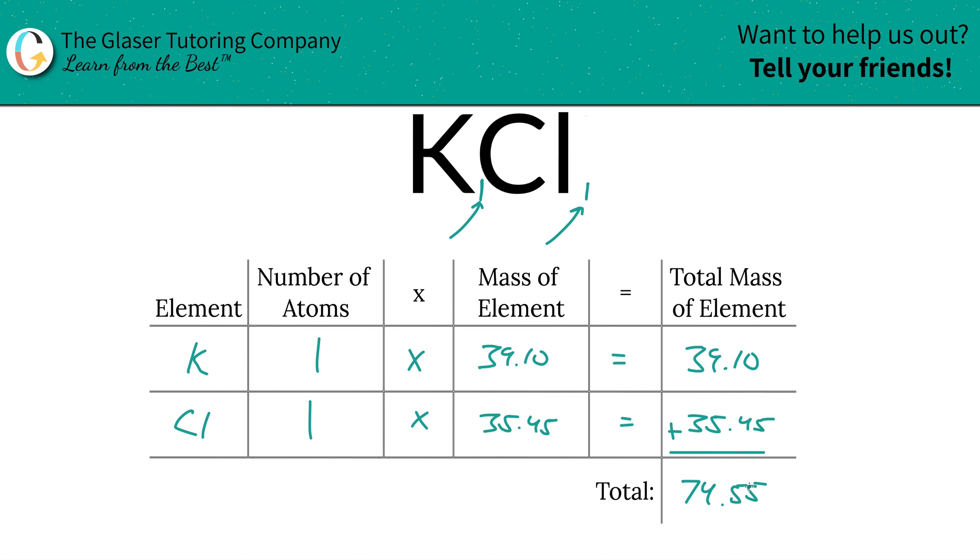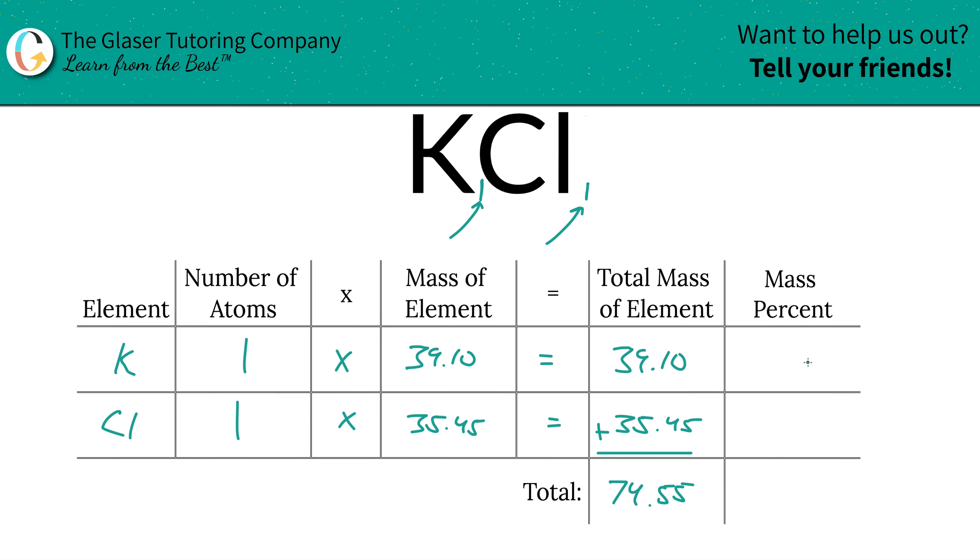Now we can find those percents of each element simply. I'm going to add a column to the table. So to find the mass percent of, let's say, potassium, we simply have to take the total mass of the potassium. So we're looking at this column here. So we're going to take 39.10, and we're going to divide it by the 74.55, multiply that by 100.